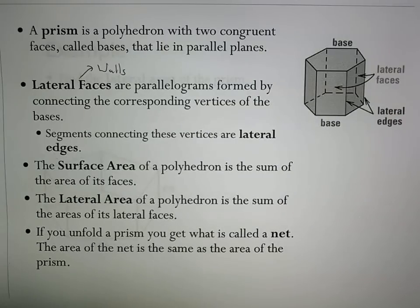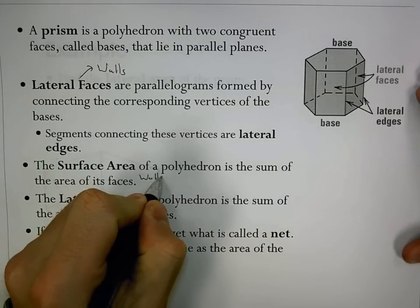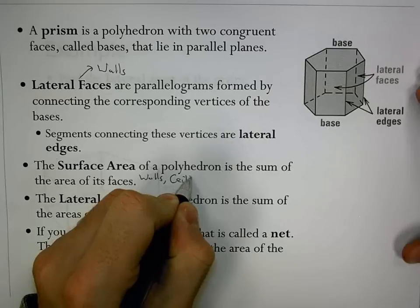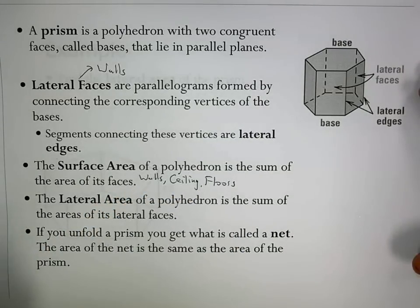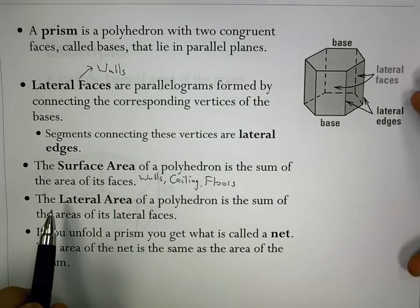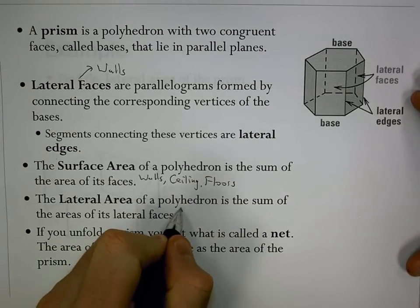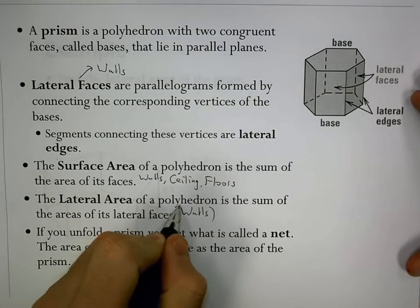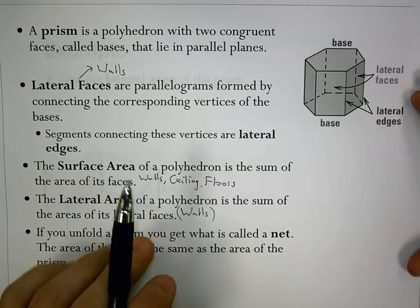The surface area is the sum of all the area of the faces - the walls, the ceiling, and the floors all combined. The lateral area is a specific part of the surface area, the sum of the areas of the lateral faces, which is just the walls.